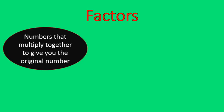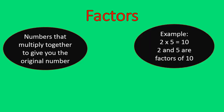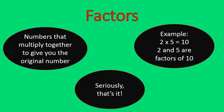A factor — these are numbers that you multiply together to give you the original number. That kind of sounds vague, so let me show you an example. Two times five is ten, so two and five are factors of ten. They multiply together to give you ten. Seriously, that's it.